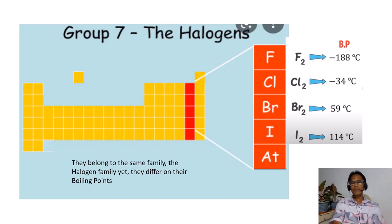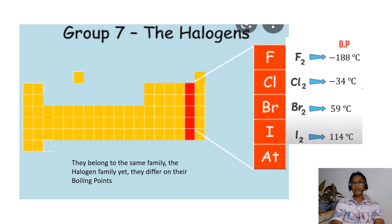They have differences in their boiling points. For fluorine gas, it has a boiling point of negative 188 degrees Celsius. For chlorine gas, it has negative 34 degrees Celsius. For liquid bromine, it has 59 degrees Celsius. Whereas for solid iodine, its boiling point is 184 degrees Celsius.